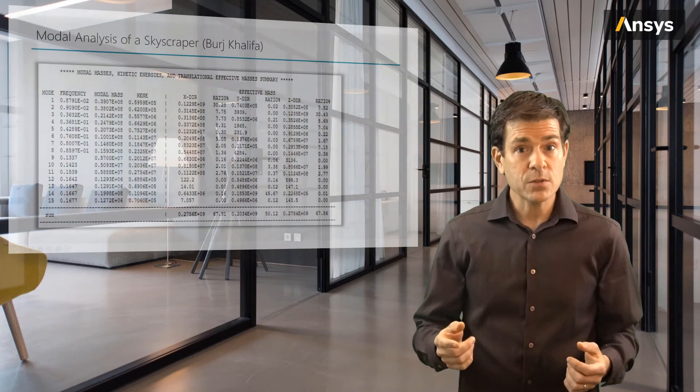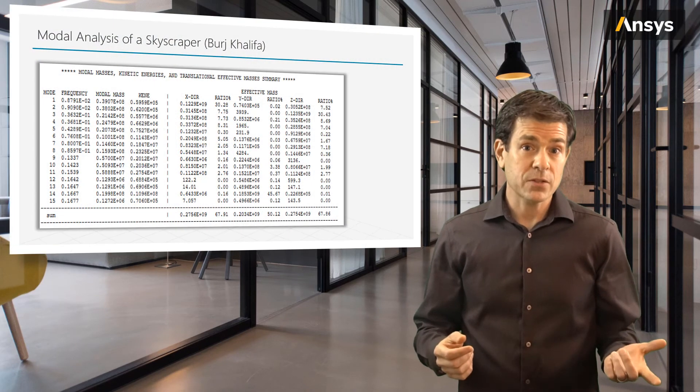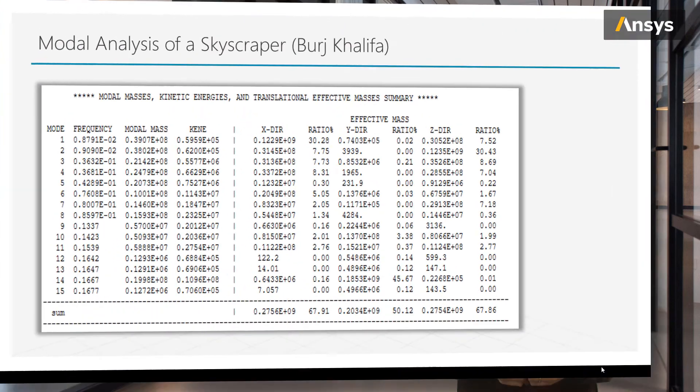So looking at these shapes, which shapes are the most significant? We can use our intuition, but we can also use some of the other quantities such as the participation factor and the effective mass, which we introduced in a preceding lesson. Looking at the effective mass percentage, we see the first two modes have the highest effective mass ratio of around 30% in the lateral direction, not in the vertical. And mode 14 is the highest in the vertical direction. These are some of the most significant modes.